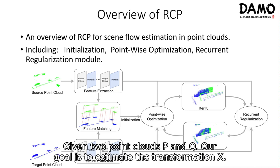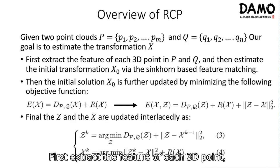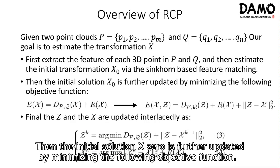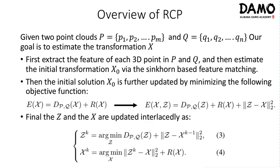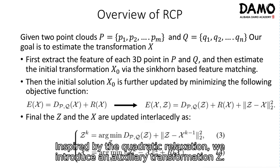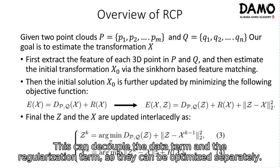Given two point clouds P and Q, our goal is to estimate the transformation X. We first extract the feature of each 3D point and estimate the initial transformation X0 based on feature matching. The initial solution X0 is then further updated by minimizing an objective function, where D is a data term measuring feature distance, and R is a regularization term measuring spatial smoothness. Inspired by quadratic relaxation, we introduce an auxiliary transformation Z to decouple the data term and regularization term so they can be optimized separately.